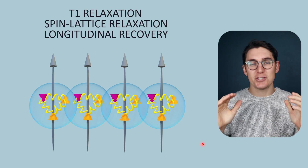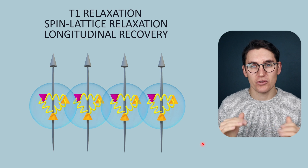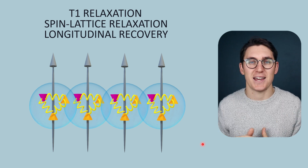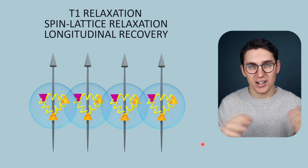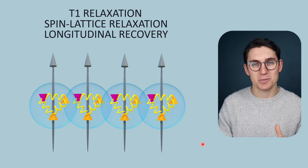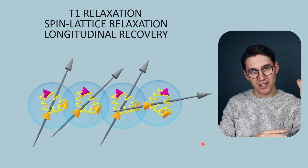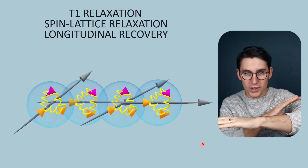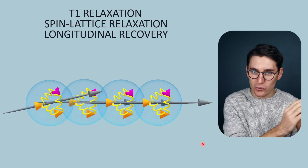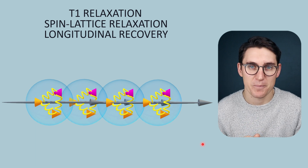In T2 relaxation, we are losing net transverse magnetization — that's why it's known as transverse decay. So ultimately what is happening in T1 relaxation is the spins that were in the transverse plane are now realigning with the longitudinal plane and we are regaining that longitudinal magnetization vector.